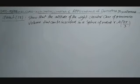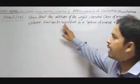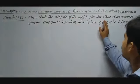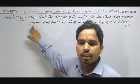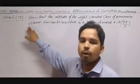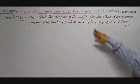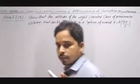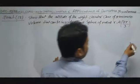Now, this is question number 15 of chapter 6 miscellaneous: Show that the altitude (height) of a right circular cone of maximum volume that can be inscribed in a sphere of radius r is 4r/3. The volume of a cone is (1/3)πR²h. Let small r be the sphere radius.